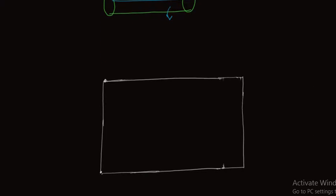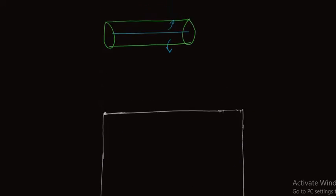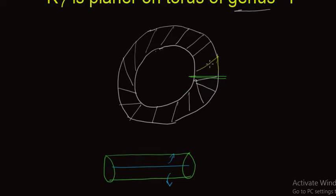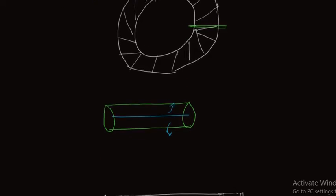This plane is a modified form of torus of genus 1, and from this plane we can get torus of genus 1. If I fold this plane such that the upper and lower edges meet and the left and right edges of this plane also meet, then again we will get torus of genus 1.